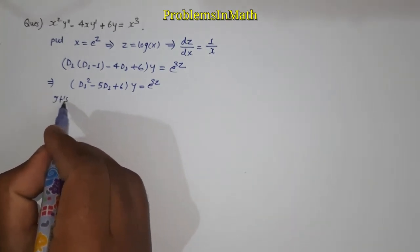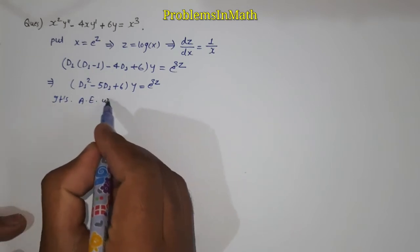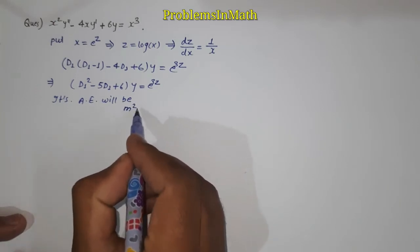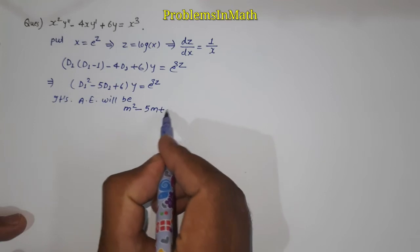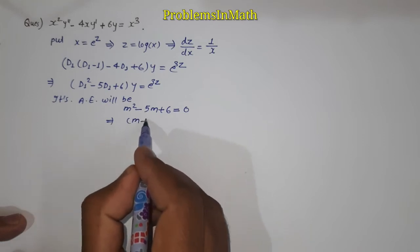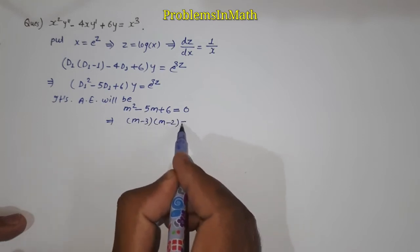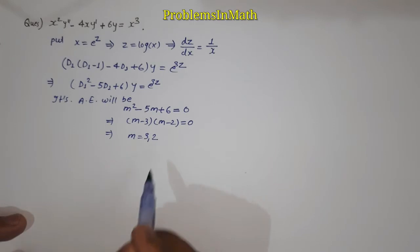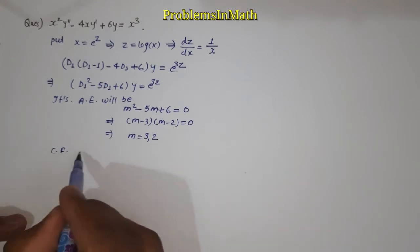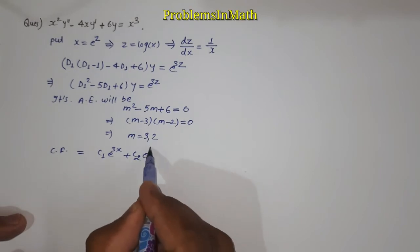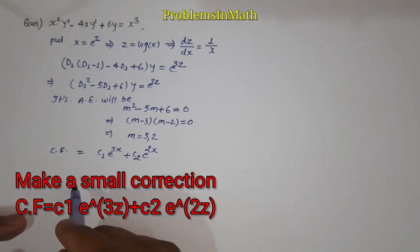Now its auxiliary equation will be m square minus 5 m plus 6 equal to 0, which gives (m minus 3)(m minus 2) equal to 0, so m equal to 3 and 2. The complementary function will be c1 e to the power 3z plus c2 e to the power 2z.